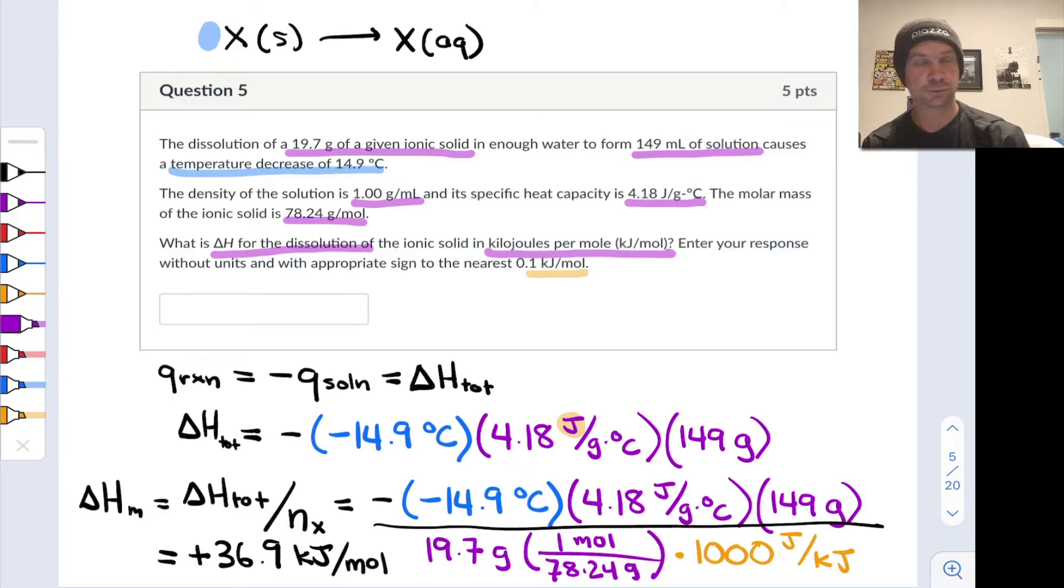The positive sign is important and could be intuited from the fact that the solution decreased in temperature when the dissolution took place. So the reaction, or the dissolution process, is endothermic, meaning the enthalpy change is positive. That also shakes out of the signs. Negative Q solution—Q solution is a negative number. A negative times a negative is a positive.